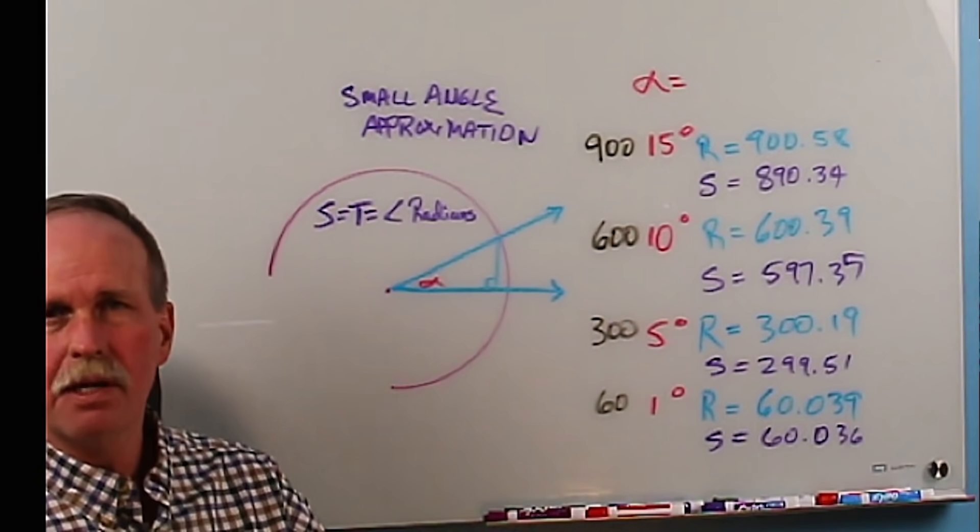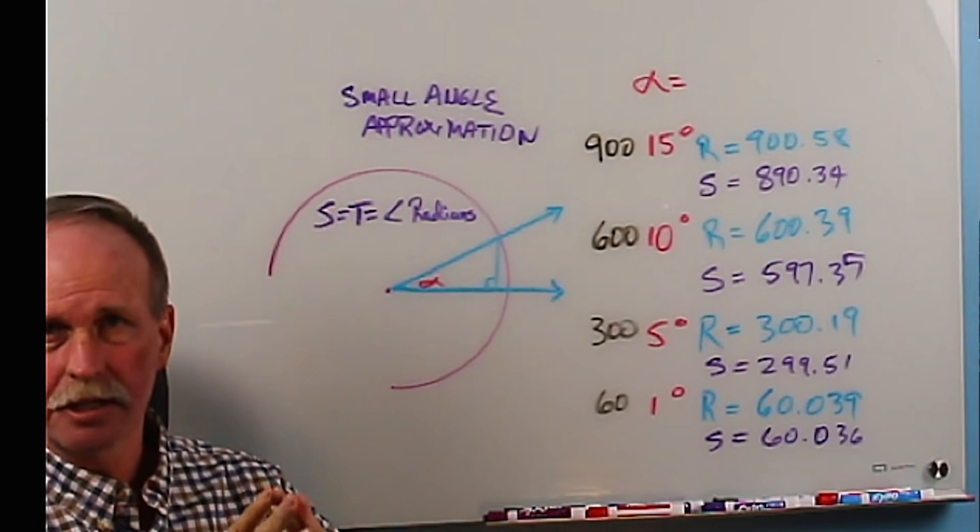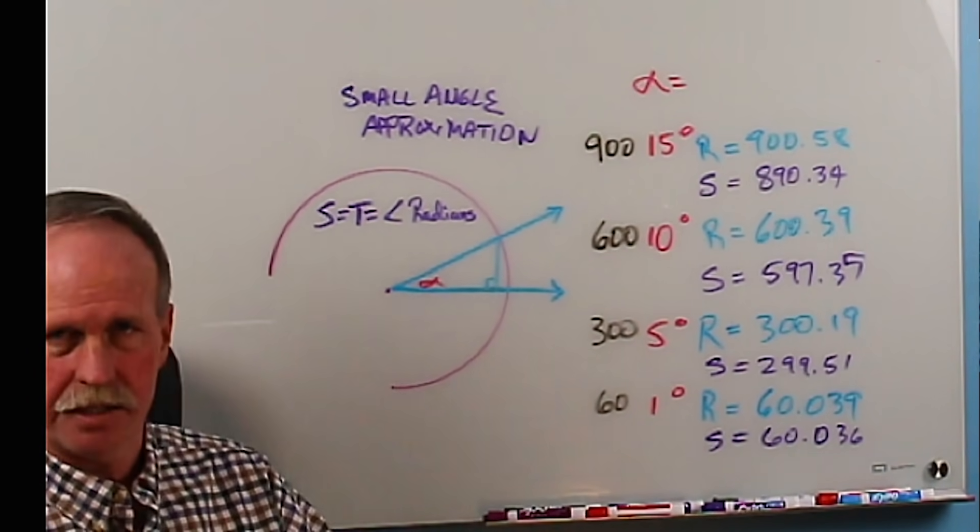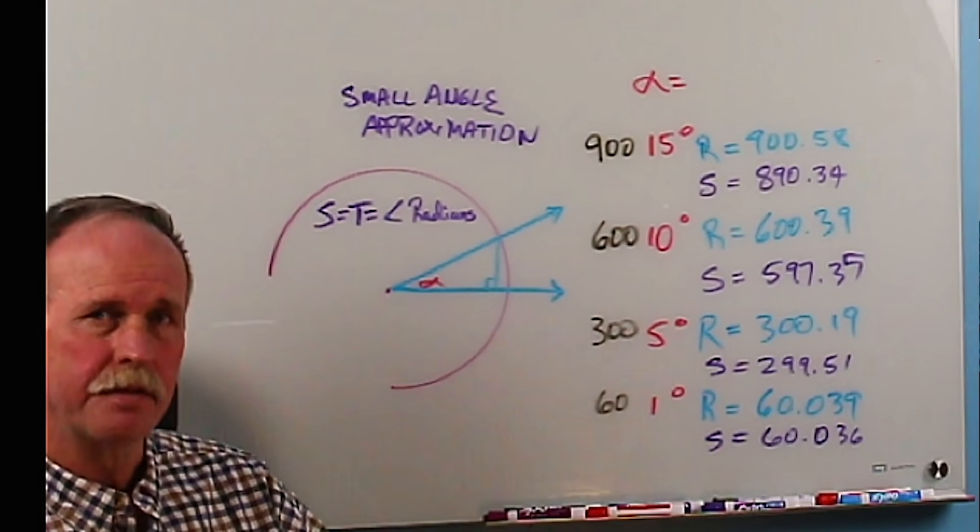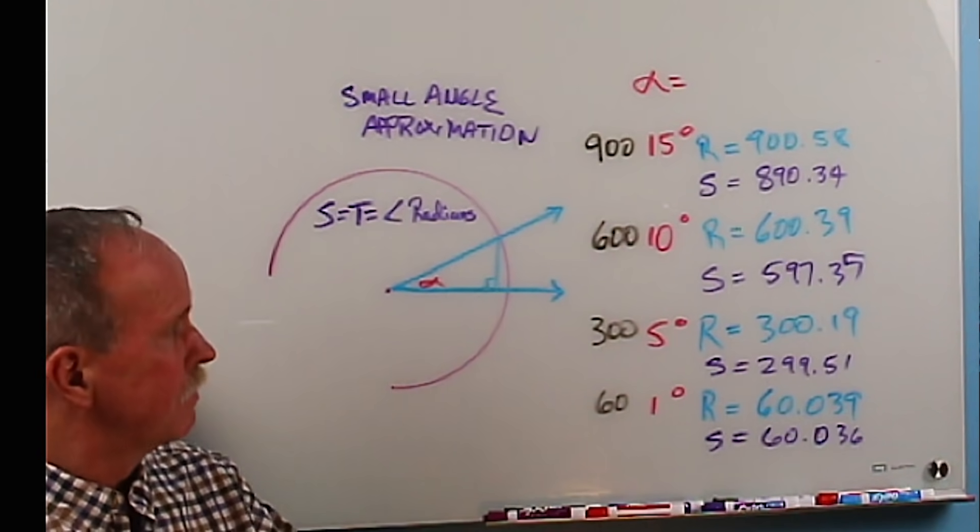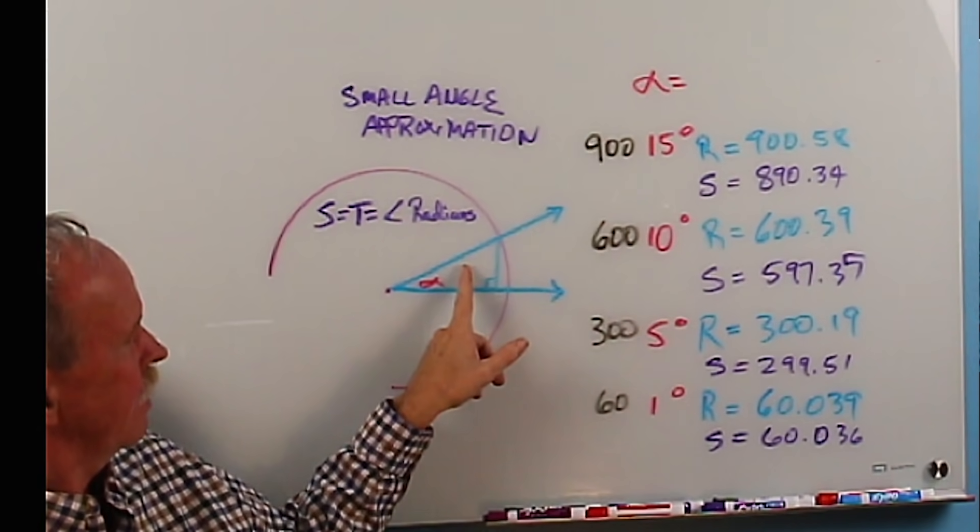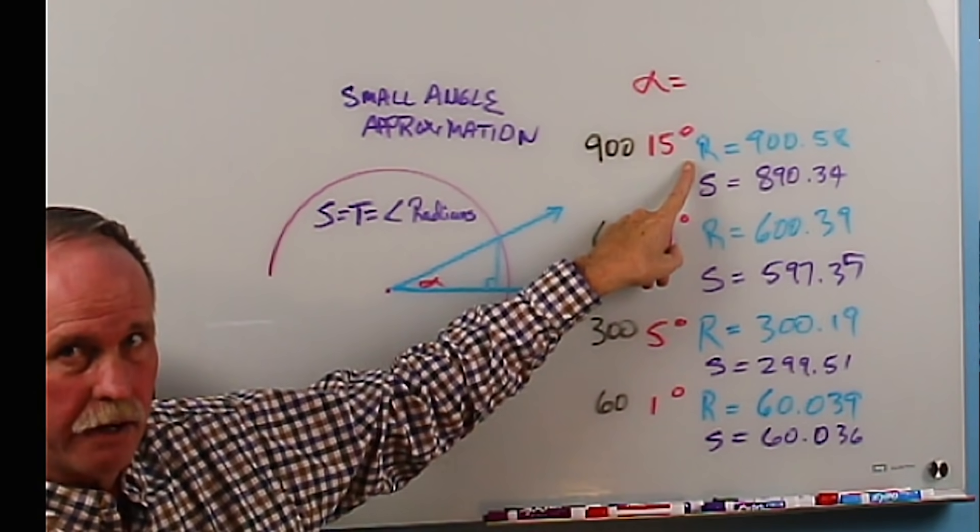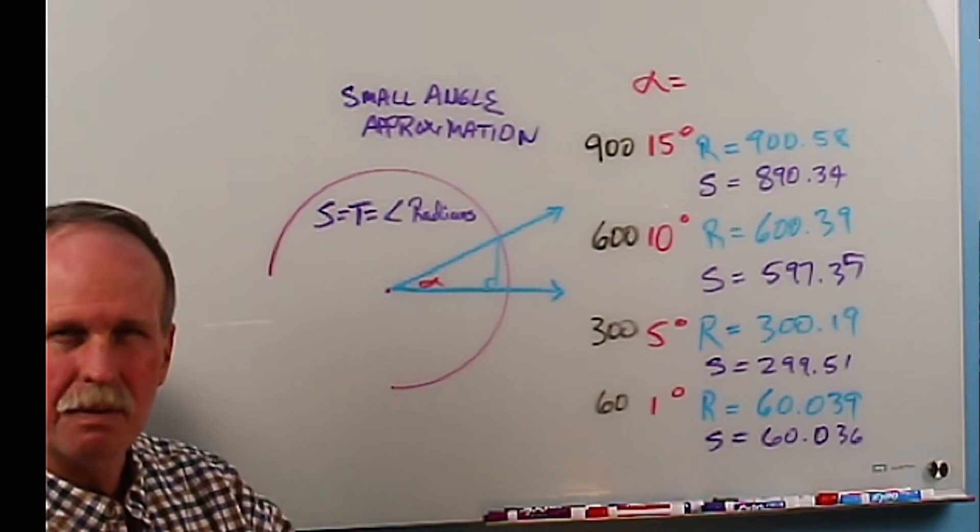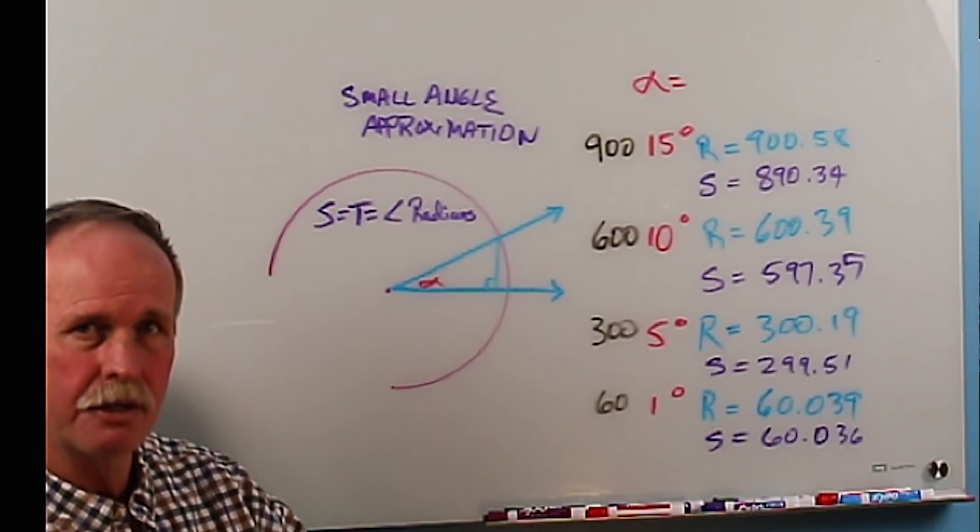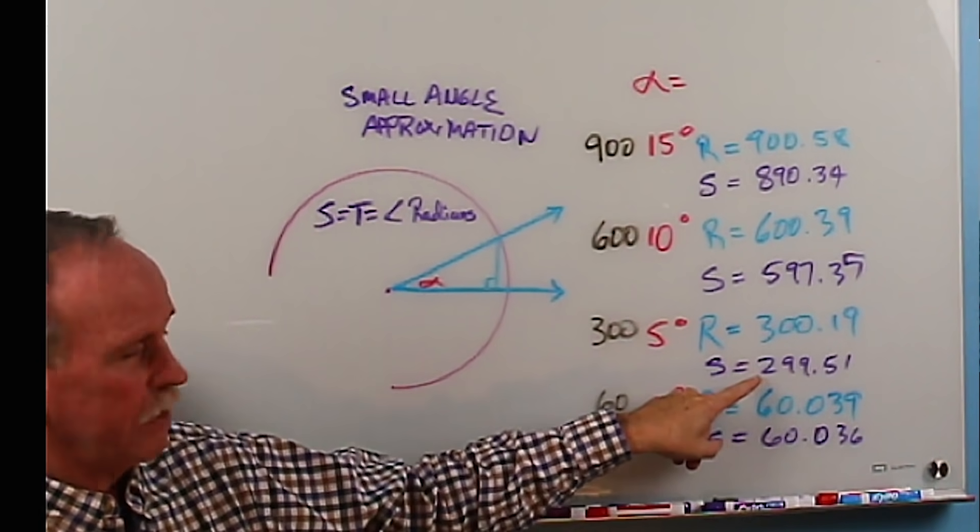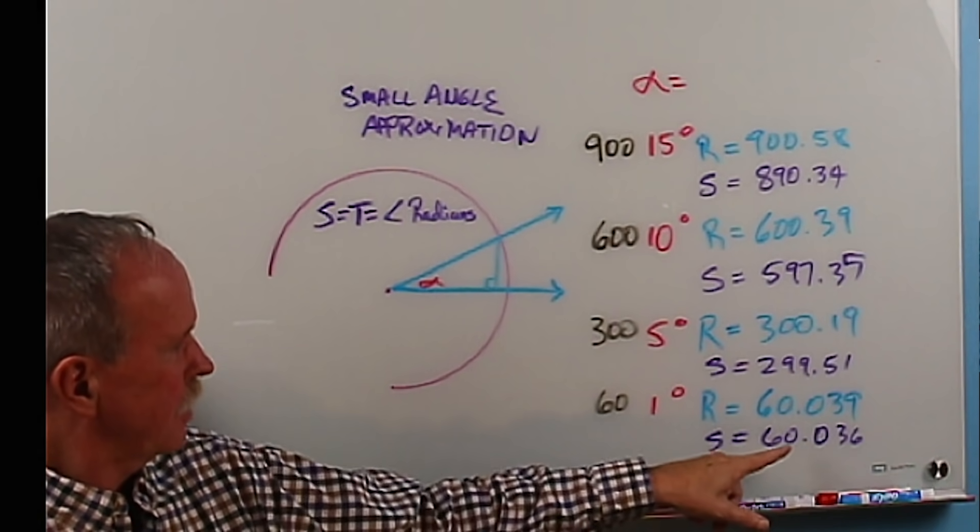Now something that we talked about a little bit is small angle approximation. Now the small angle approximation in science says that for small angles, the sine and the tangent equal the angle in radians. Now to test that out, we can actually find the values for a number of different angles. Now say we have the earth here with a radius of 3440 nautical miles. The distance across the ground for 15 degrees, if angle alpha is 15 degrees, would be 900 nautical miles. If we calculate it by radians, it's 900.58. And if we just take the sine, it's 890.34. Again, at most 10 miles off over 900 miles. You can see the numbers here for 10 degrees. Again, we're getting closer. 5 degrees, getting very close. And by the time you get down to 1 degree or less, it's almost indistinguishable.